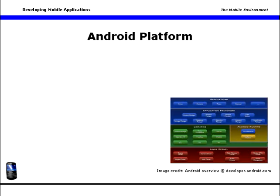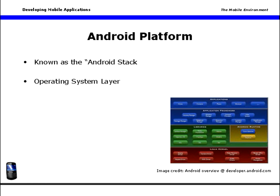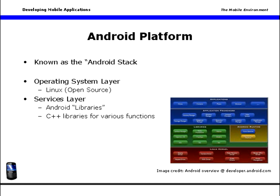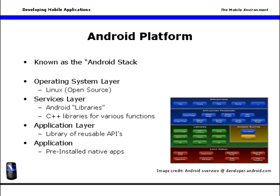The Android platform, also known as Android Stack, is a collection of software services and libraries joined together to drive the system we know as Android. At the operating system layer, Android runs on a version of the Linux open source operating system. At the services layer, Android features a series of libraries written primarily in C++, which carry out various device and software functions. At the application layer, Android provides a library of reusable APIs, or application programming interfaces, which may be used or reused by your applications. Android also provides a series of pre-installed applications such as browser, contacts, and that sort of thing. For developer purposes, Android apps are written in Java or a Java derivative.